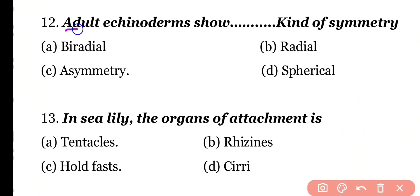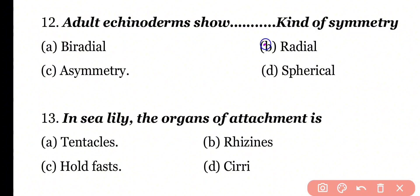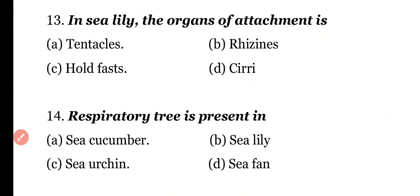Question 12: Adult Echinoderms show which kind of symmetry — Biradial, Radial, Radial asymmetry, or Spherical symmetry? Correct answer is Option B. Adult Echinoderms show radial symmetry, while the larval form shows bilateral symmetry.